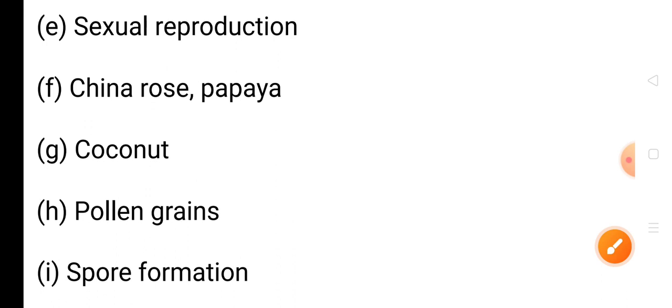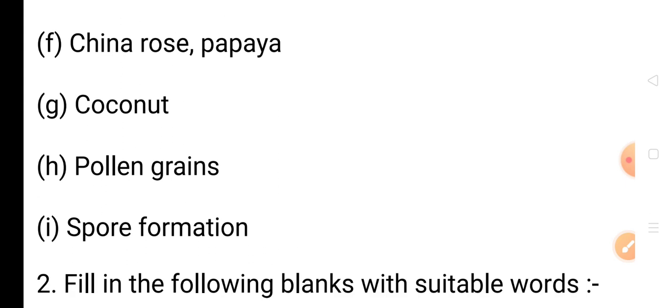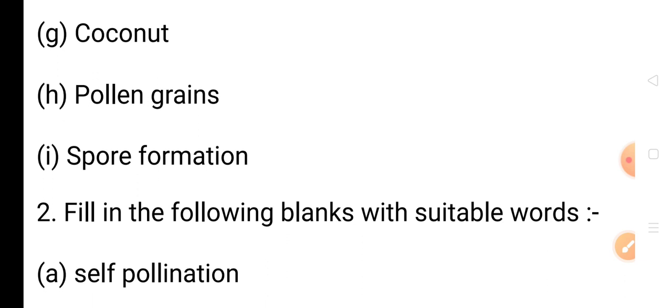Now we are going to solve Fill in the Blanks with suitable words. These are NCERT book questions. Question 1: The transfer of pollen grains from the anther to a stigma of the same or another flower of the same species is known as — self-pollination. The answer is self-pollination.